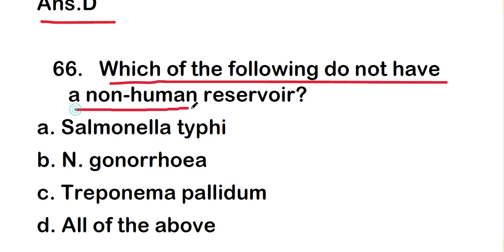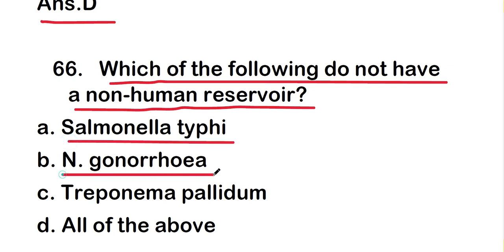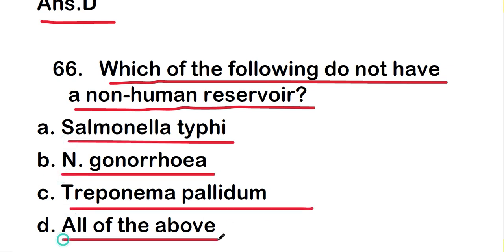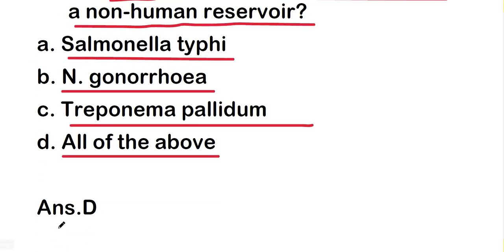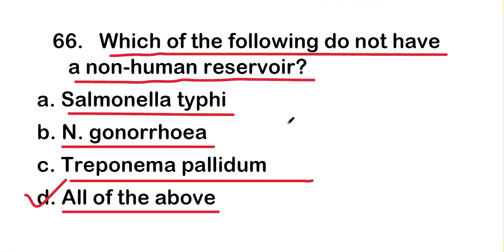The next question: which of the following do not have a non-human reservoir? Options are Salmonella typhi, Neisseria gonorrhoeae, Treponema pallidum, or all of the above. The right answer is option D, all of the above. All of these organisms do not have a non-human reservoir.